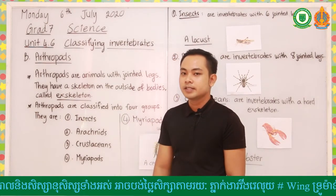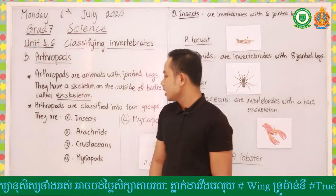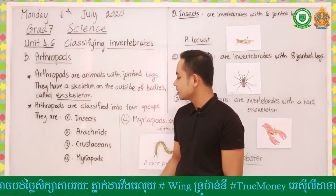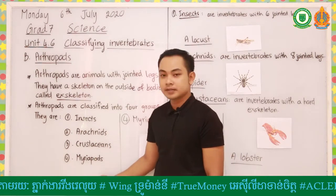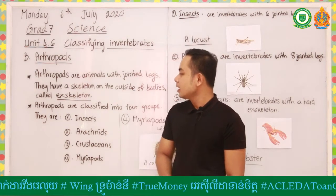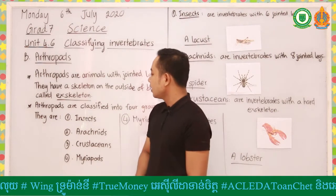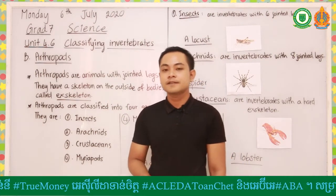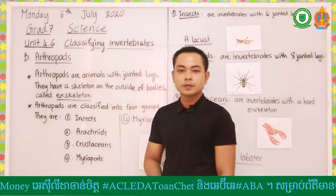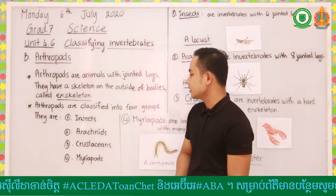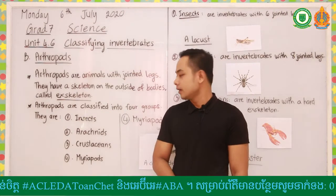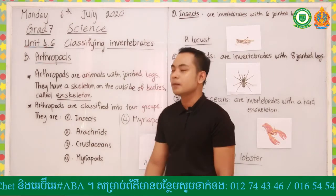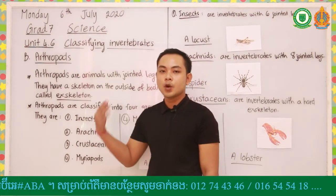Arthropods are classified into four groups or four classes. Do you know what they are? They are insects, arachnids, crustaceans, and myriapods. We're going to study more about each one of these arthropod groups.